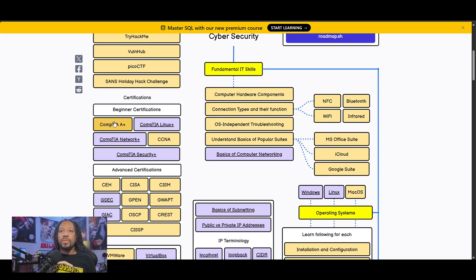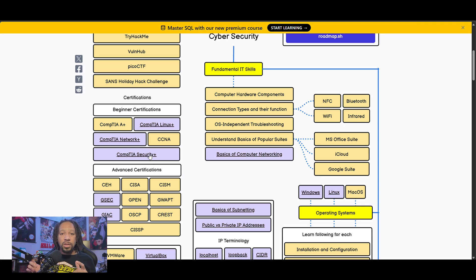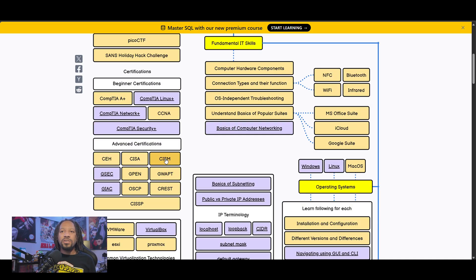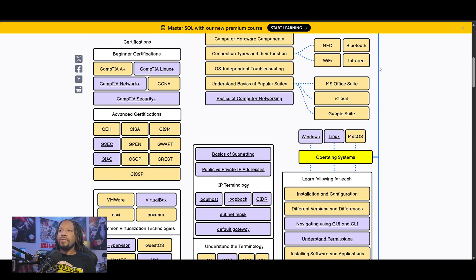When it comes to certifications, you don't necessarily need the A+, but Linux+ is really good because you're going to do a lot with Linux in cybersecurity, and Network+ gives you the networking foundation which needs to be solid before you pursue the Security+, which is the foundational entry-level cybersecurity certification I've received in the past — it helped transform my career. As for advanced certifications like the CEH and OSCP, those are specialty certifications really specific to penetration testers and people who want to become red teamers.